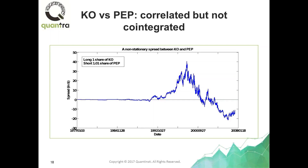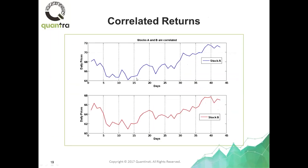If you take their spread — essentially the portfolio of long one share of Coca-Cola and short 1.01 shares of Pepsi — the net market value of that portfolio is what people refer to as the spread. This spread doesn't appear mean-reverting at all. For eight years it just keeps going down. So despite Coca-Cola and Pepsi moving up and down together half the time each day, they are not co-integrated — the spread is not stationary and you cannot trade it in a mean-reverting strategy.